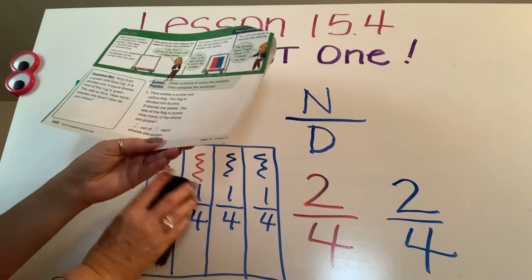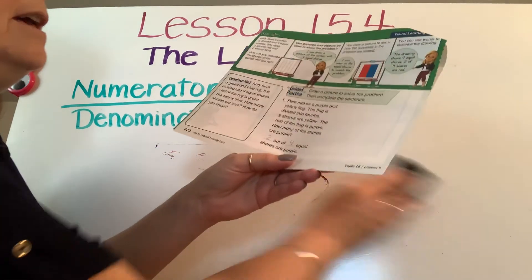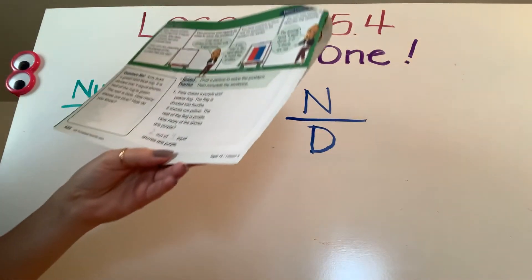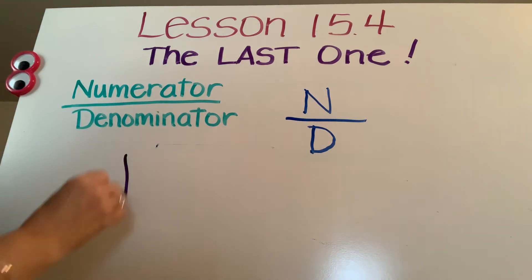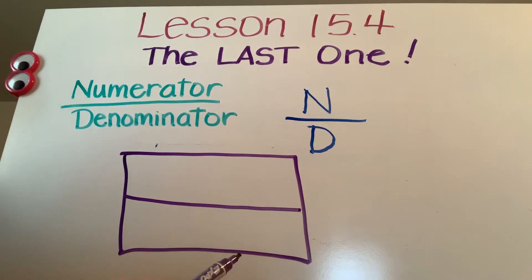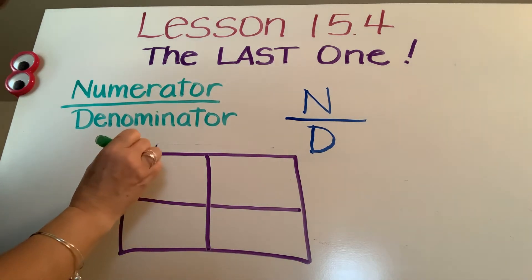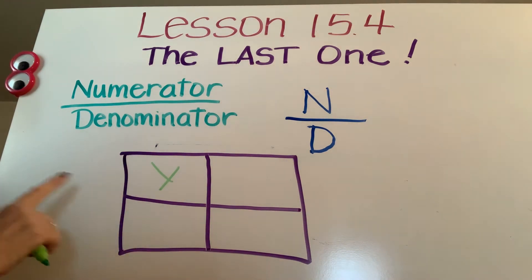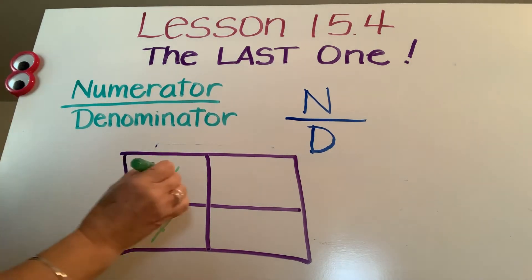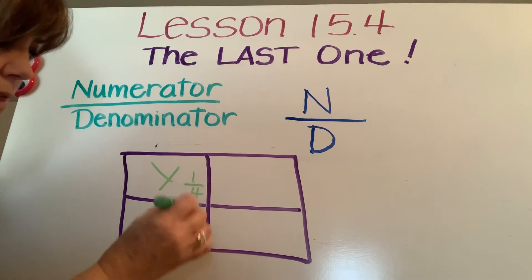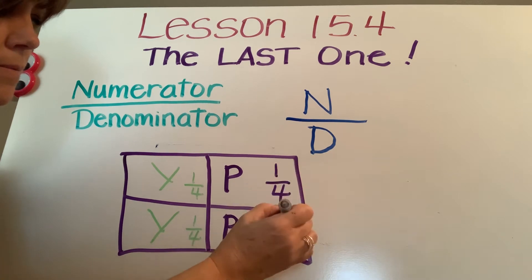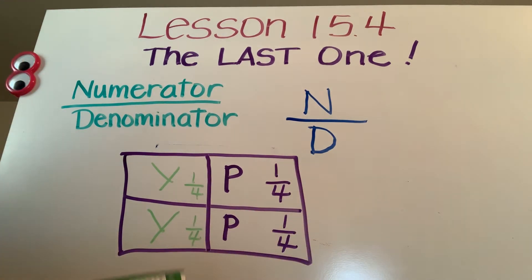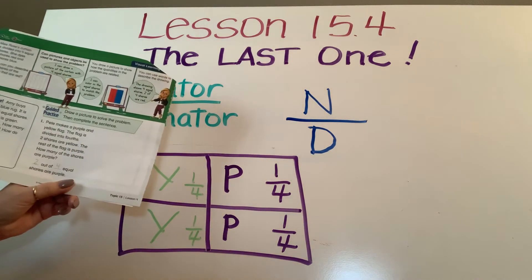Let's go down to number one on our sheet. Pete makes a purple and yellow flag. The flag is divided into fourths. Two shares are yellow, and the rest of the flag is purple. How many shares are purple? Well first let's draw our flag. And we're going to draw it into four. Because they said fourths. And you know what, I don't think I have yellow, but lime green might work. And I'm just going to say yellow. There's yellow for one share, and yellow for a second share. And I'm going to put, remember it's, this piece is worth one out of four. And purple are the last ones.